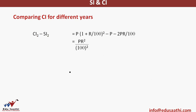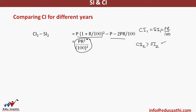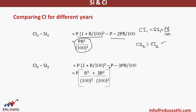Comparing CI and SI for different years: CI for year one equals SI for year one, both equal to PR/100. For subsequent years, compound interest will always be greater than simple interest because the principal is greater. The difference between CI and SI for two years is (PR/100)², i.e., P × R²/100². For three years, I can subtract CI for three years minus SI for three years to get the difference formula.